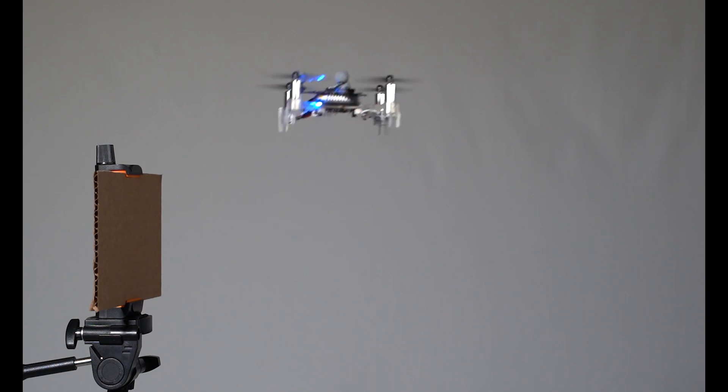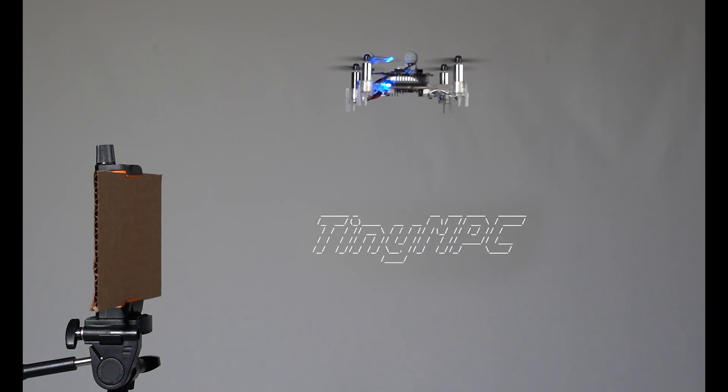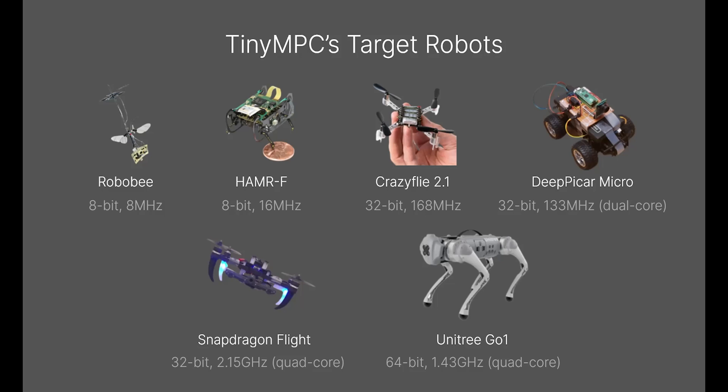Model predictive control is a powerful tool for controlling robotic systems subject to complex constraints, but is computationally demanding. Many robotic platforms have limited compute power, and in general, the smaller they are, the less they have, while at the same time requiring faster control loops to stabilize their higher speed dynamics.